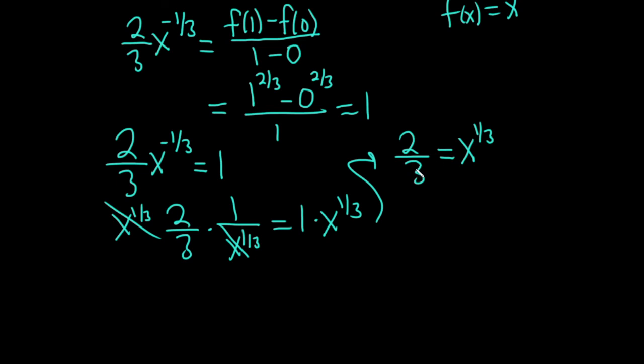And because it's x to the one third and we're looking for x, what we can do is we can cube both sides. We'll cube this, cube this, three times one third is one. So you just get x. Here we get two cubed, which is eight, three cubed, which is 27. And so that's the value of c.